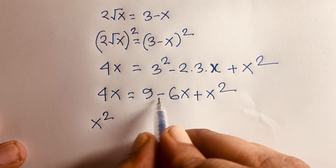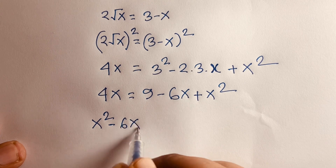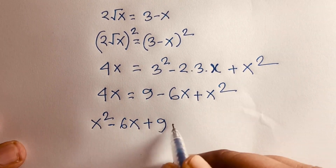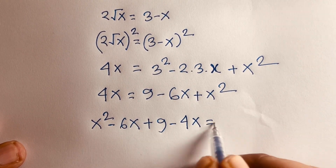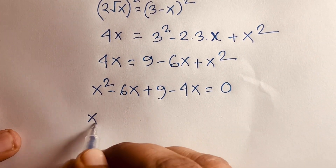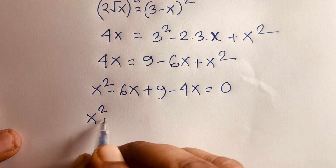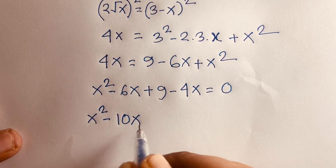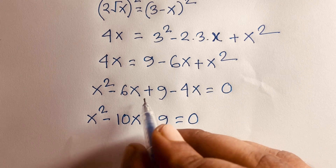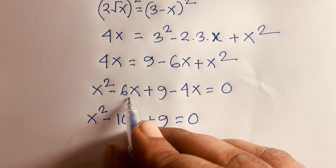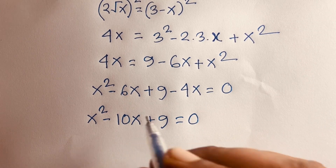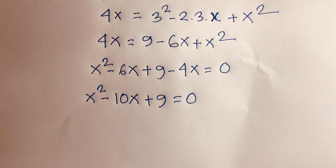Rearranging: x² - 6x - 4x + 9 = 0, which simplifies to x² - 10x + 9 = 0.